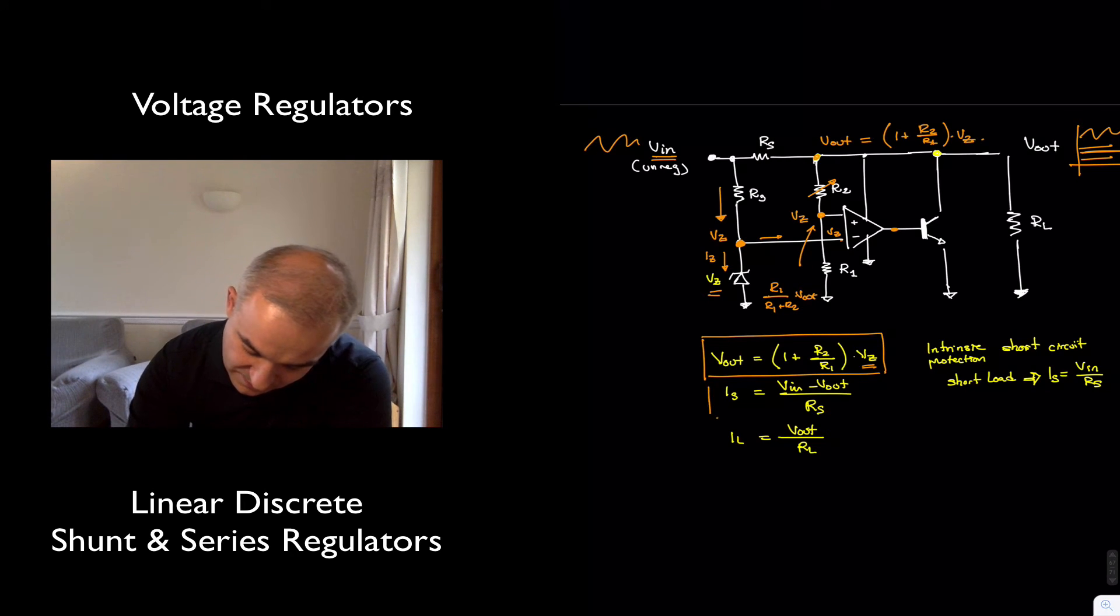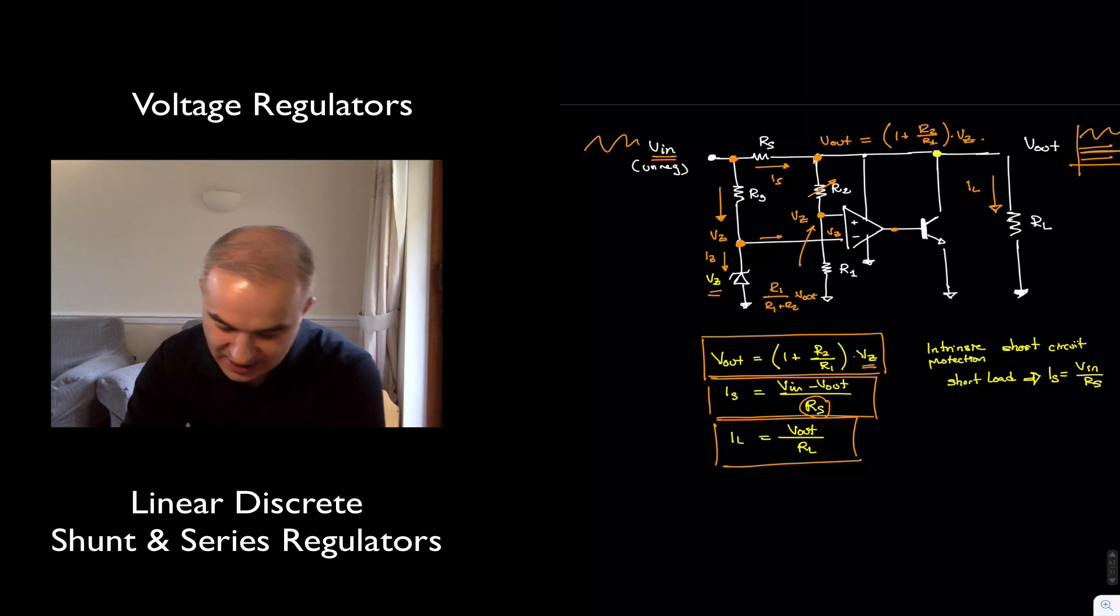The biasing current is still the input over the input minus the output, this is Is, divided by Rs, and this needs to be enough to provide both the load current, as well as the current to bias the circuit. And the output current, therefore, is V output over RL.